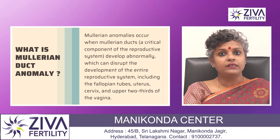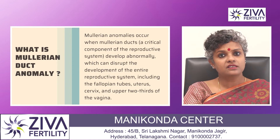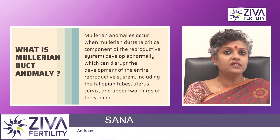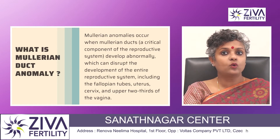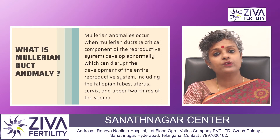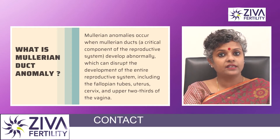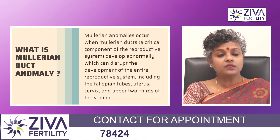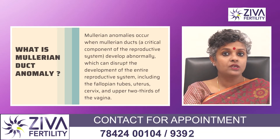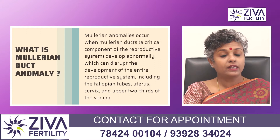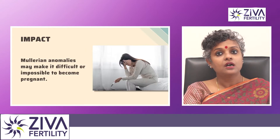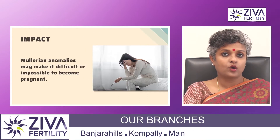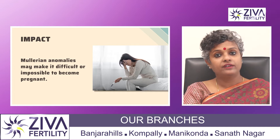During normal development, these ducts come together. When this happens, a single uterus with an open cavity and two fallopian tubes on either side are formed. Sometimes the uterus and the fallopian tubes may not form like they should. These malformations are called Mullerian anomalies or defects.